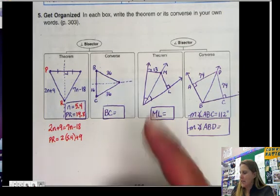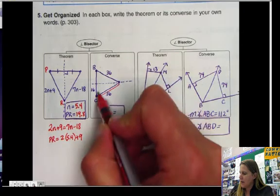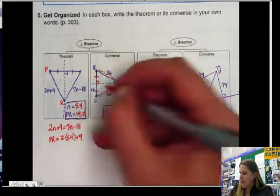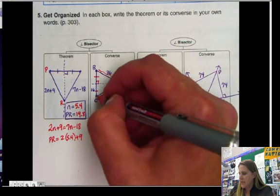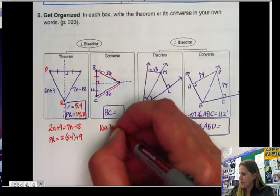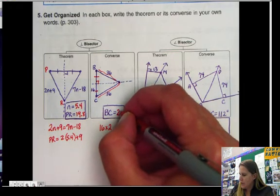Okay? The second example here, we have the converse. So since these two are equal to each other, we know that this is on the perpendicular bisector. So if this length, half of it is 16, then the whole length is 16 times 2, or 32.